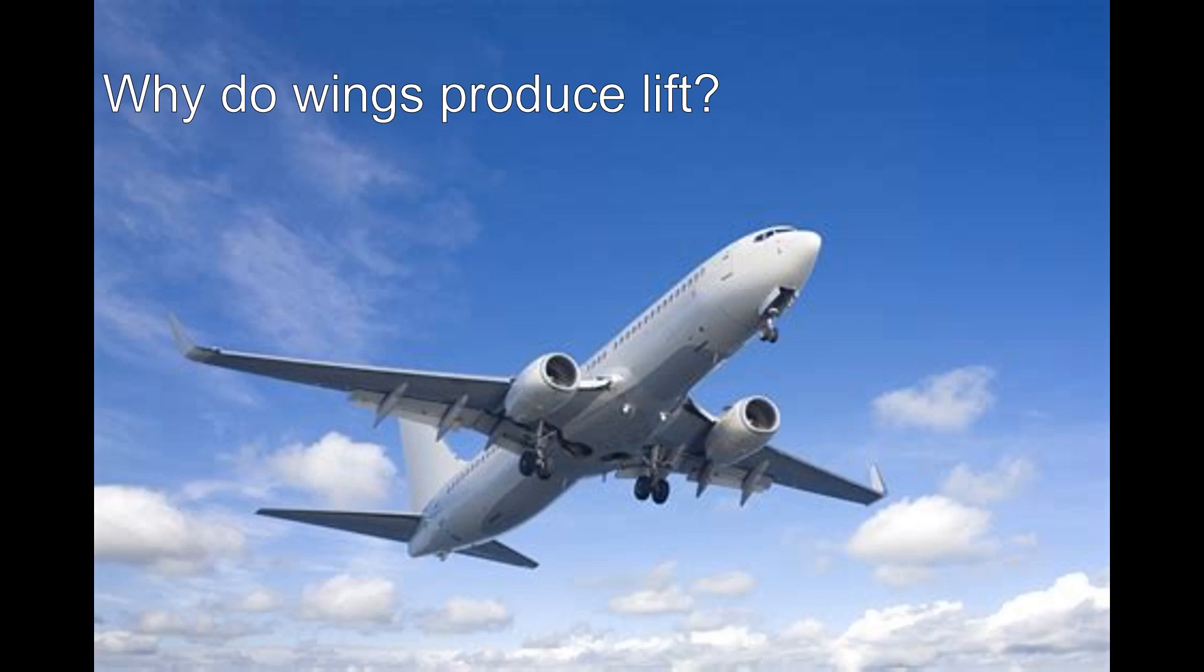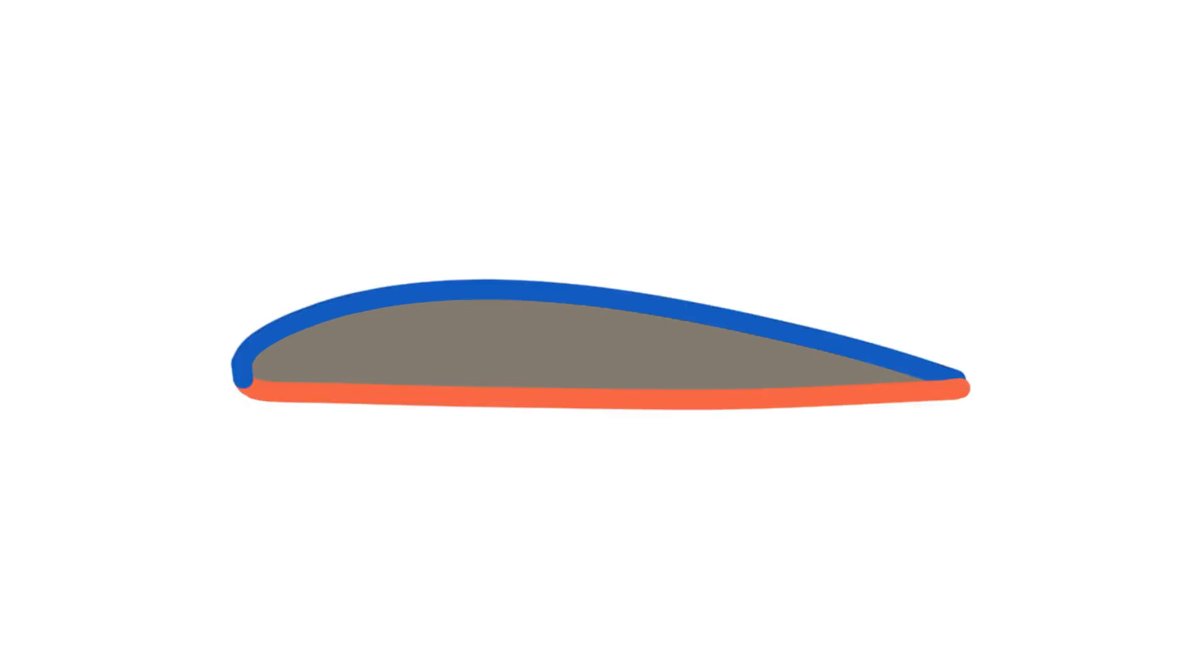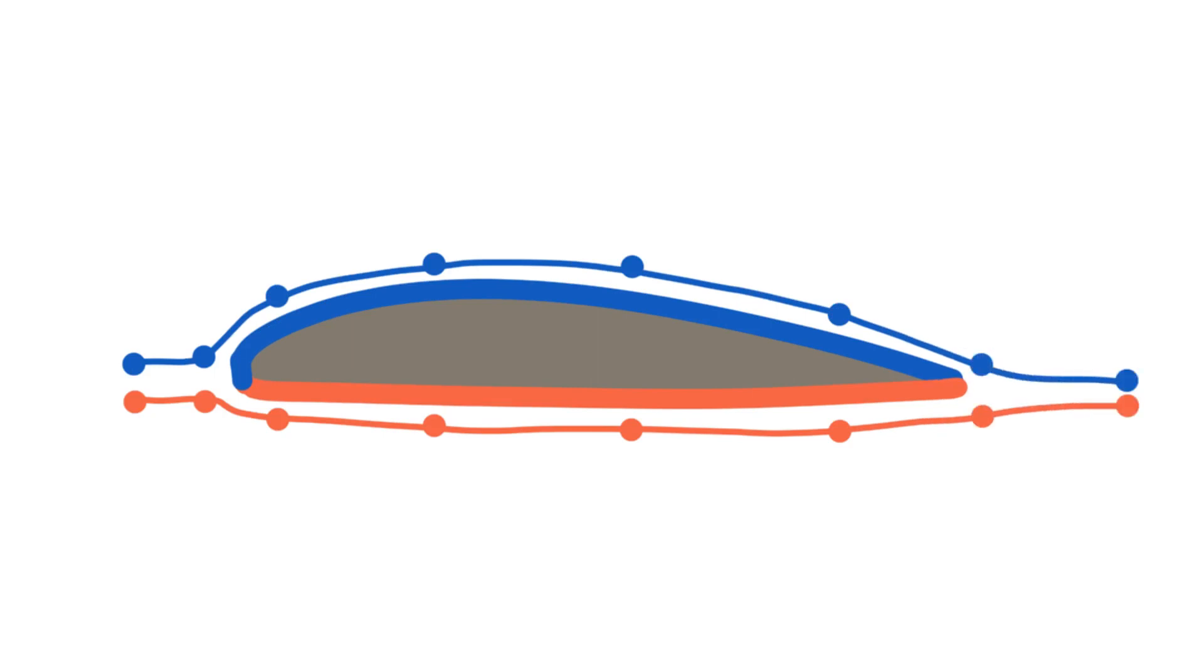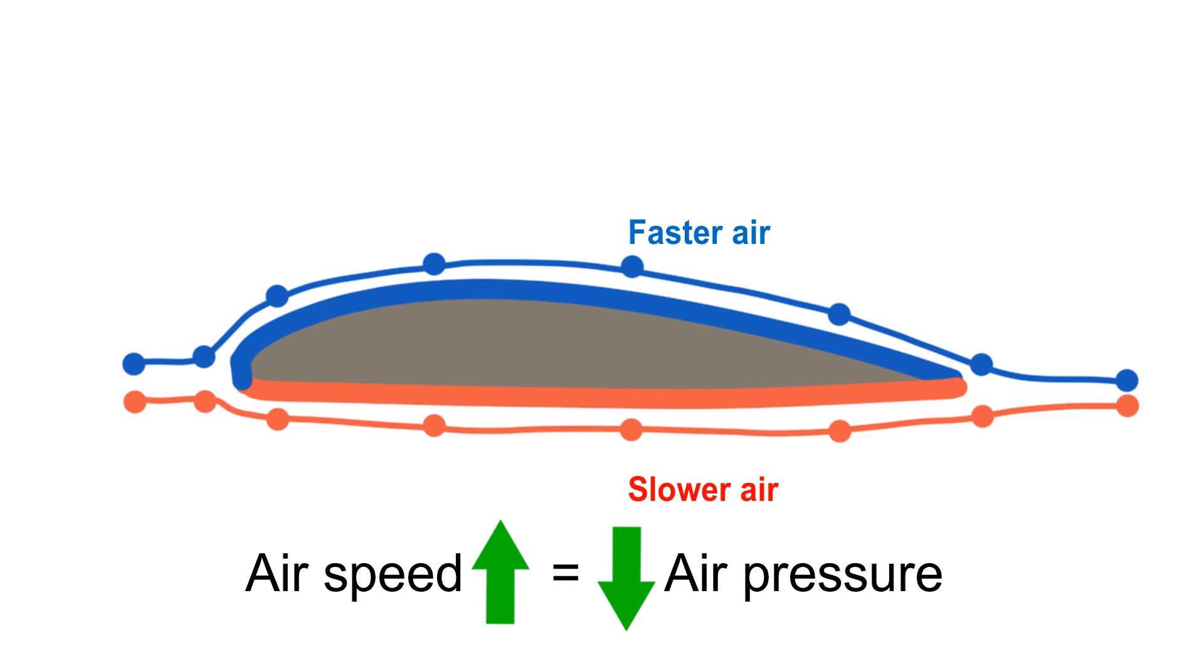Why do wings produce lift? In school, we were taught that lift is the result of the top of a wing being longer than the bottom. Therefore, if two air molecules traverse a wing in the same amount of time, the air that went over the wing must have traveled faster, and since faster-moving air has lower pressure, the speed difference also produces a pressure difference, creating lift.